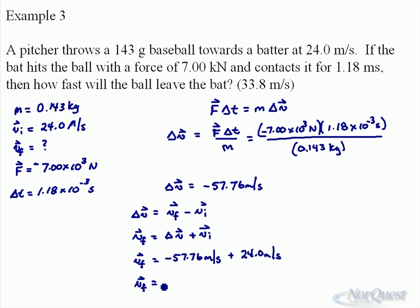So the final velocity will end up being negative 33.8 meters per second. Now, again, that's indicating direction. The ball is going to leave in the opposite direction it came in at. That's what that negative sign means. But when you look at the question, it says how fast. Well, how fast is referenced to speed. It's not referenced to a vector. So therefore, we can then write the final velocity not as a vector, 33.8 meters per second.